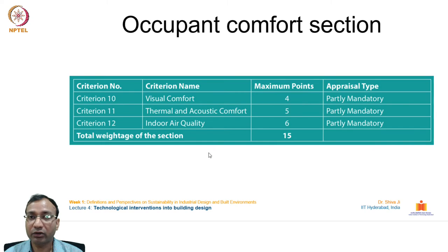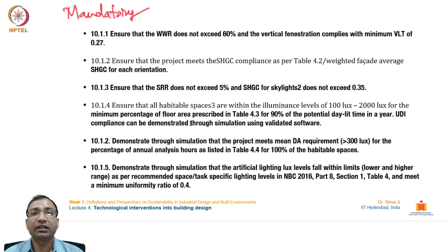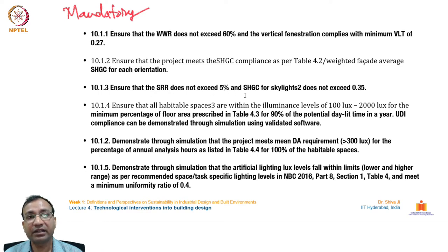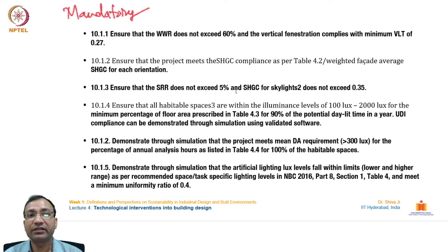Mandatory visual comfort requirements include: window-to-wall ratio not exceeding 60%; vertical fenestration complying with minimum SHGC of 0.27; project meeting SHGC compliance per Table 4.2 for weighted façade average per orientation; SRR not exceeding 5% and skylight SHGC not exceeding 0.35; and all habitable spaces maintained within illuminance levels of 100 to 2000 lux for the minimum floor area percentage for 90% of potential daylight hours annually.